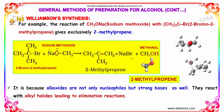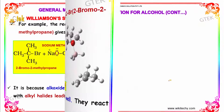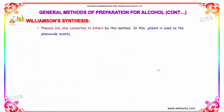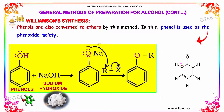This is because alkoxides are not only nucleophiles but strong bases as well, and they react with alkyl halides leading to elimination reactions. Phenols are also converted to ethers by a similar method, where phenol is used as a phenoxide moiety. Phenols when reacted with sodium hydroxide form a phenoxide, which then reacts with an alkyl halide to form a phenyl ether.